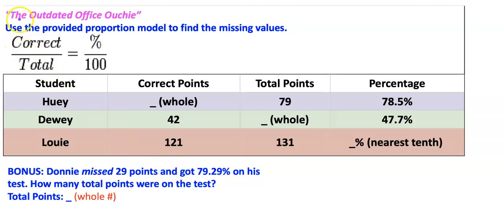Hey what's up students? Let's do the outdated office ouchie. Use the provided proportion model to find the missing values. So we have some students, we have correct points, we have total points, we have percentage, and then we have a bonus. So basically I'm going to give you several of these pieces. You got to fill them out and find the missing pieces.